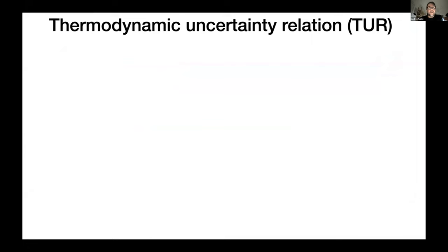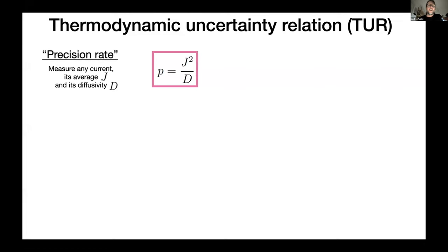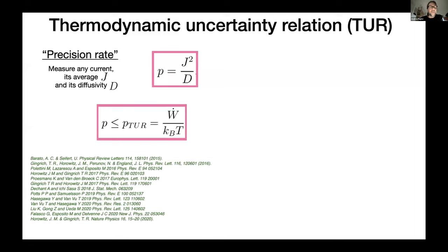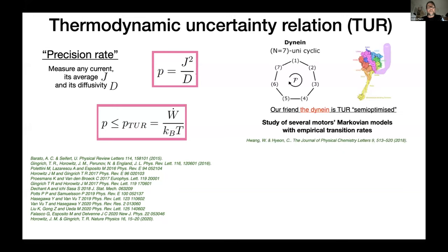And of course, there are several proposed mechanisms to understand how the way that these molecular motors, some kind of spontaneous coordination, creates the wave beating. So the traveling wave that makes the sperm swim. So the other actor of this talk is the thermodynamic uncertainty relation. You basically measure in your non-equilibrium system any kind of current. You measure, for instance, in the steady state, which is the simplest case. You measure its average and its diffusivity. You define a precision rate, which is the ratio between the square of the J divided by D. And this precision rate is bound as an upper bound, which is the content of the thermodynamic uncertainty relation.